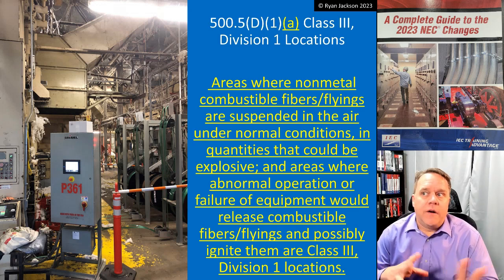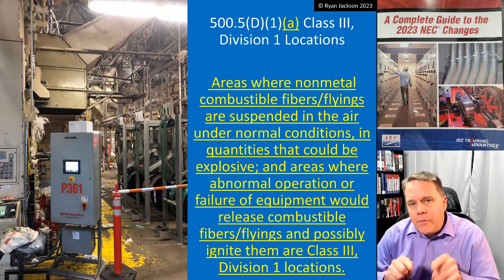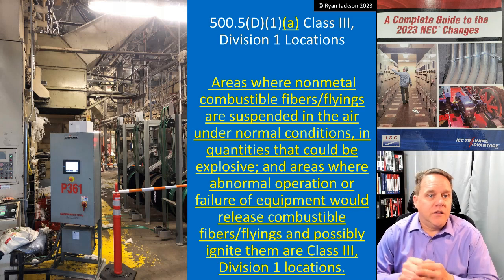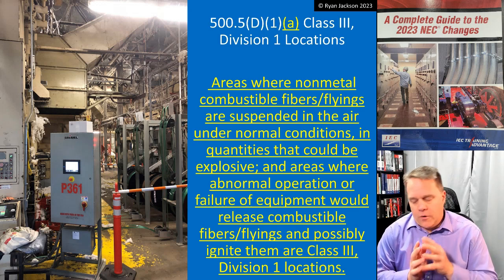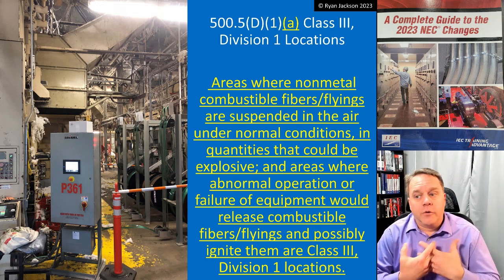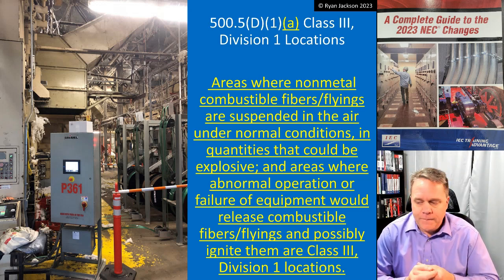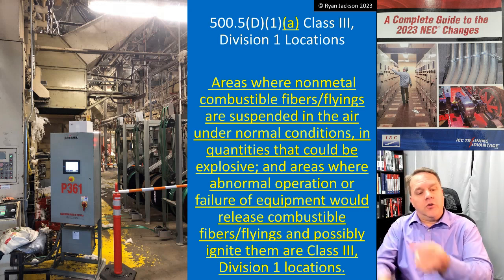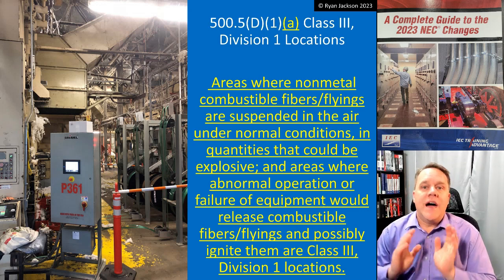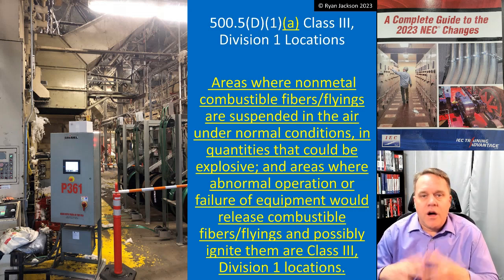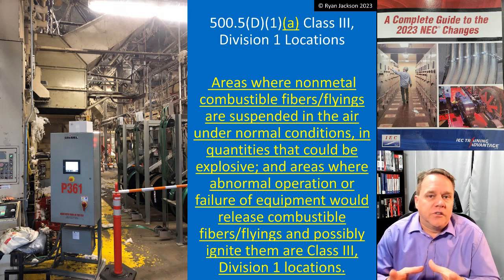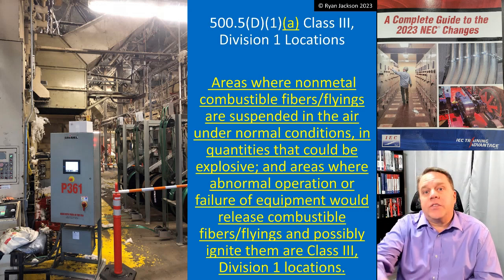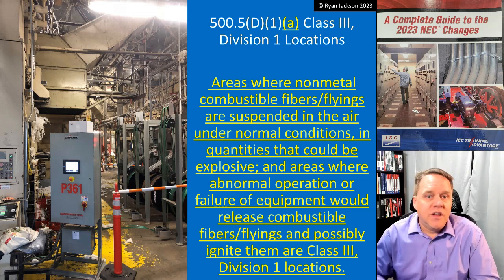The big thing is: what is the normal condition? For example, sanding wood creates combustible dust. The difference between combustible dust and combustible fibers and flyings is simply the size of the solid material. On a wood lathe, if you're doing it right, you get streamers of wood shooting over your shoulders — that is much bigger than combustible dust, and that would be an example of a fiber or flying.